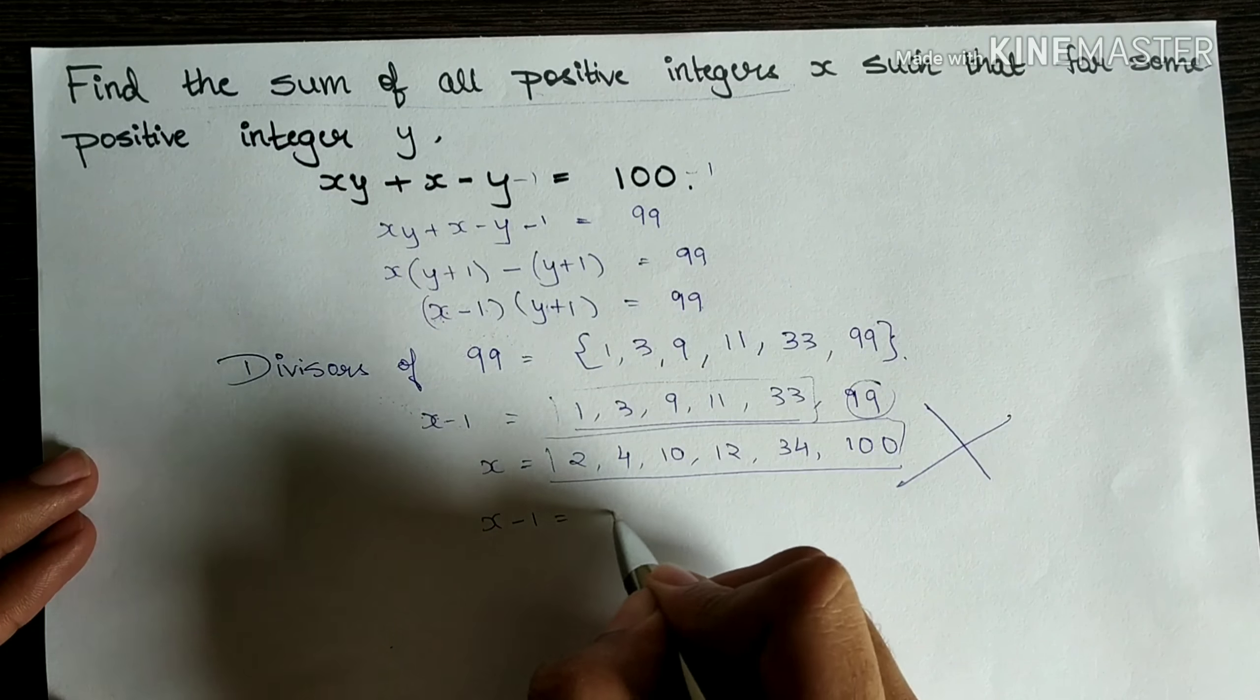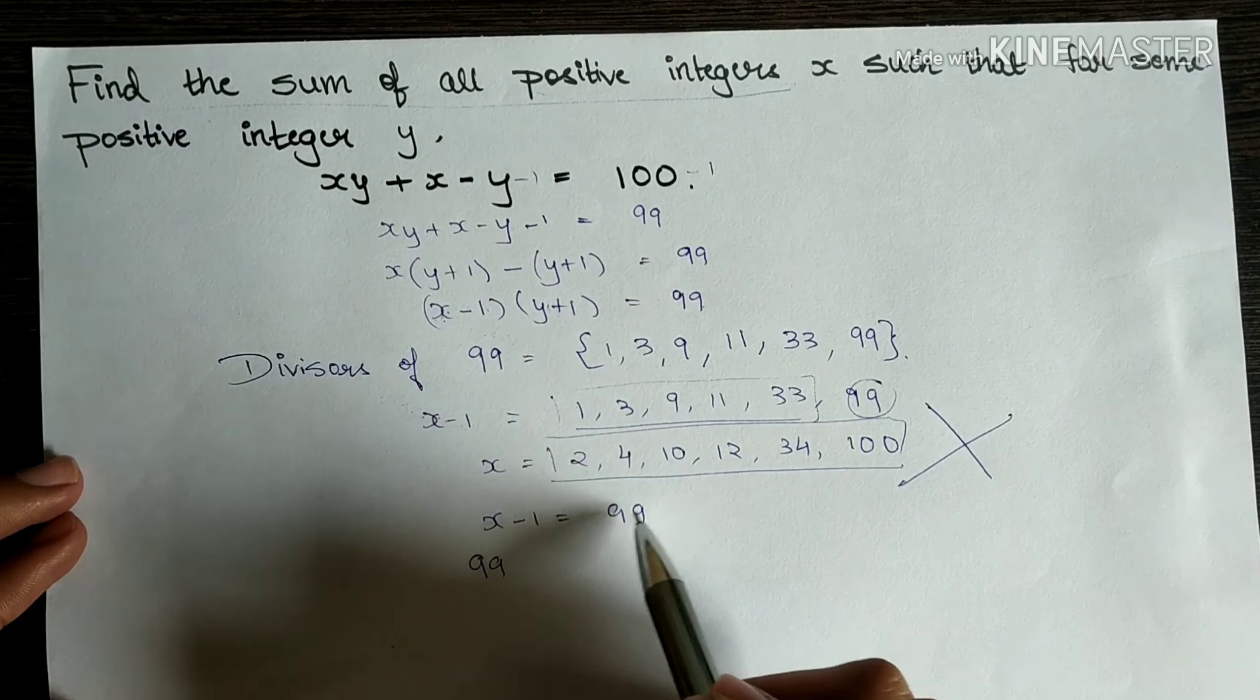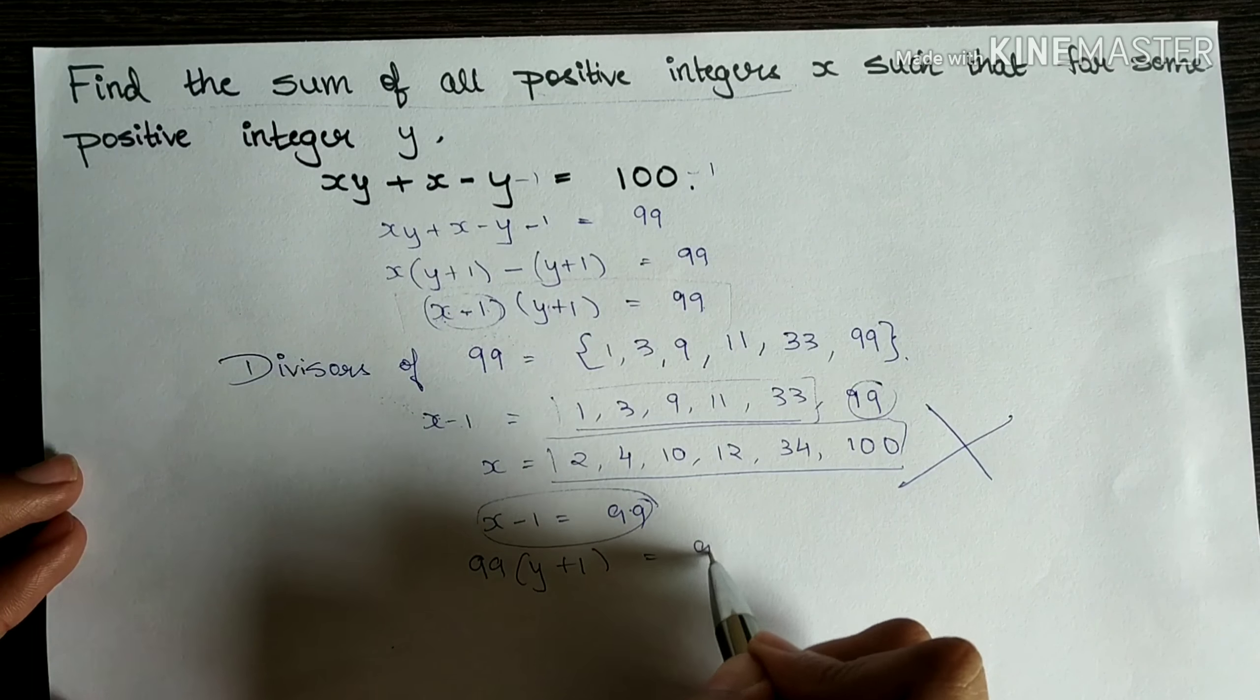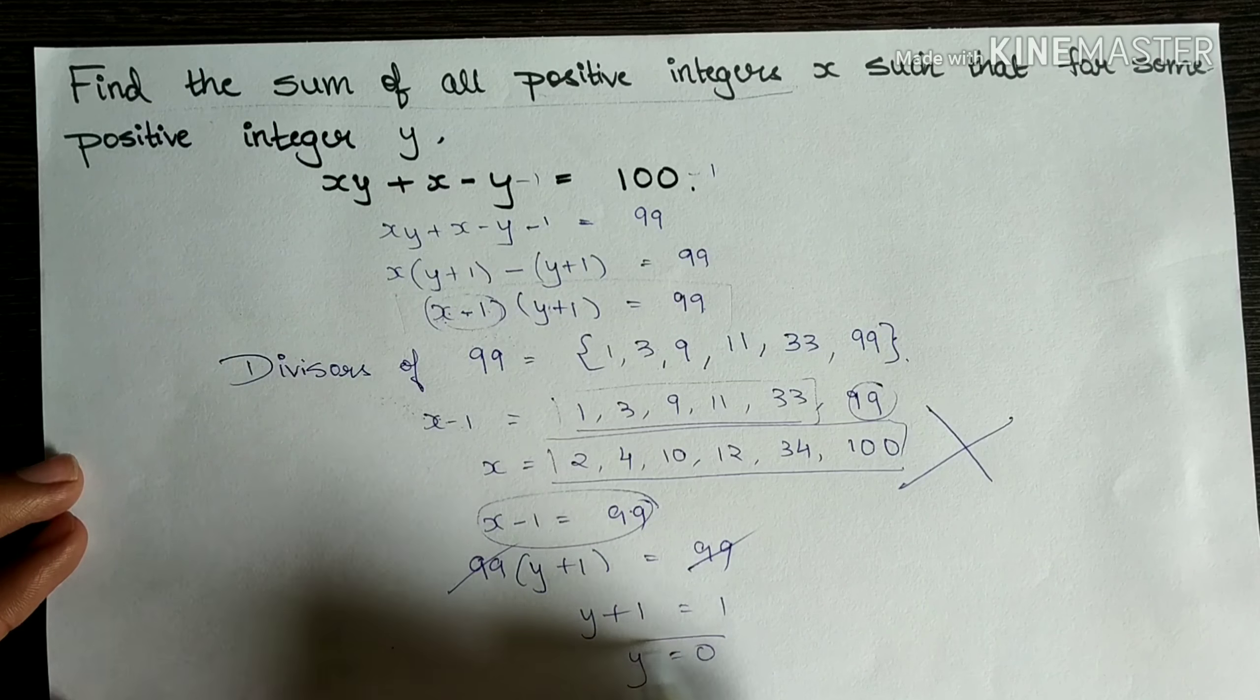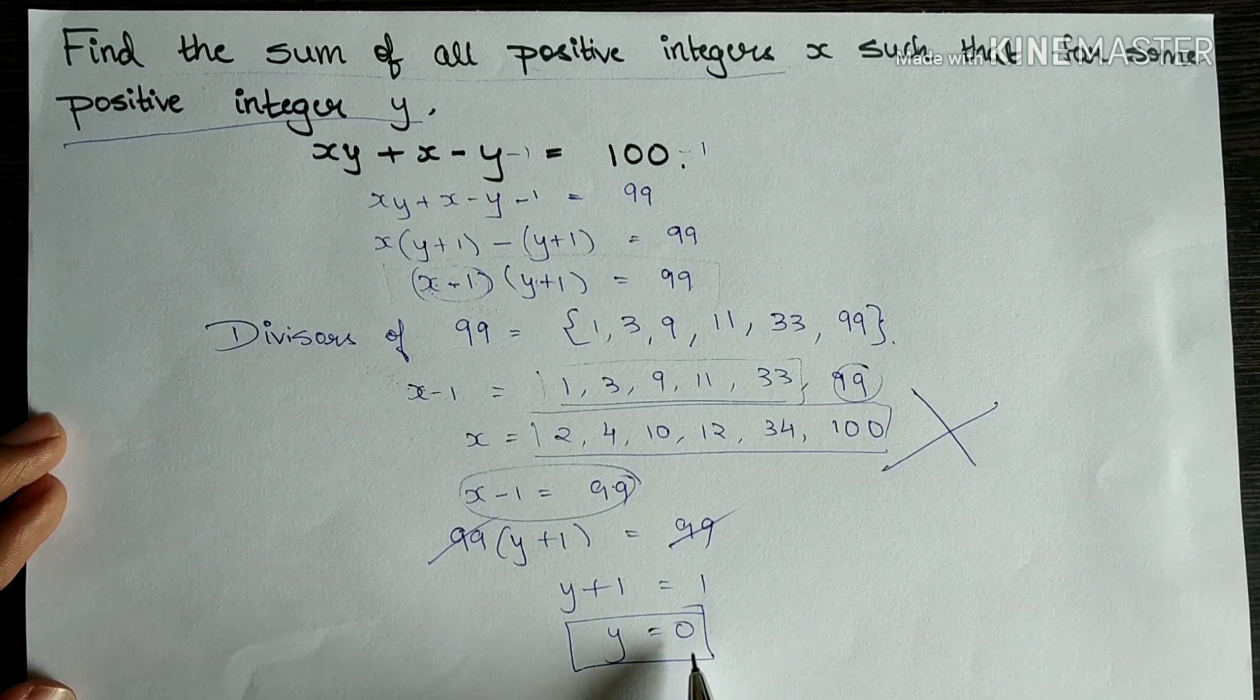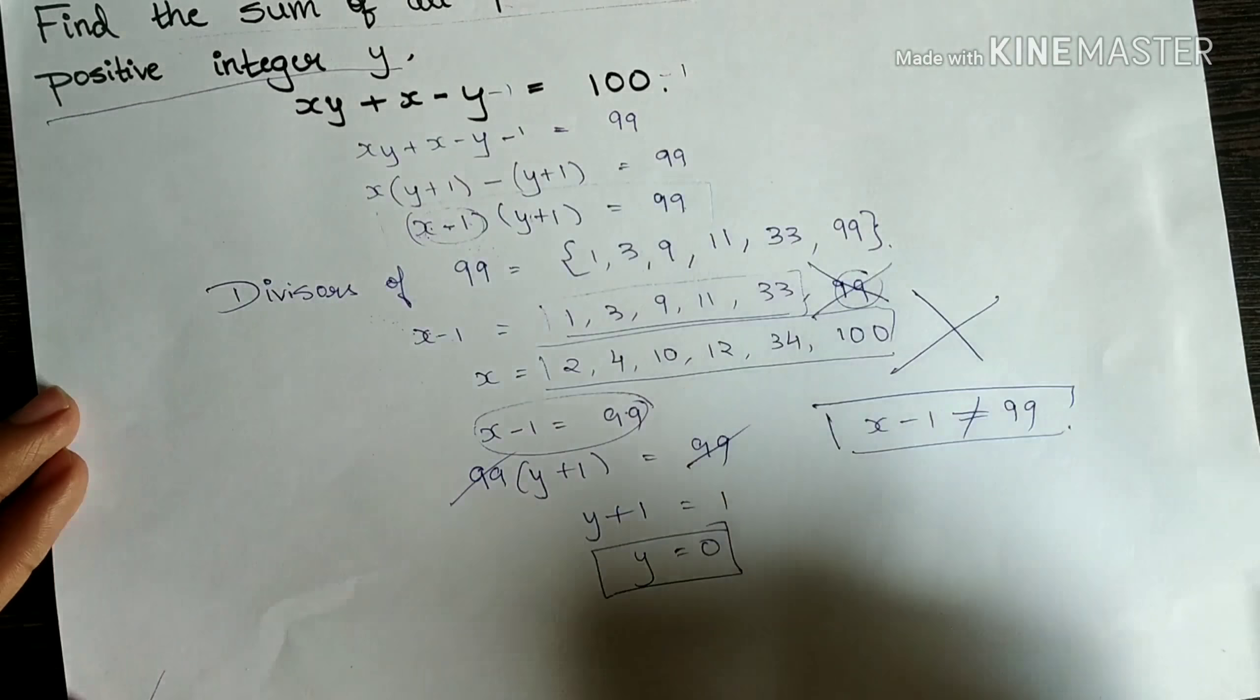If I equate x minus 1 is equal to 99, then obviously I have 99. See, I am equating it to 99. So it should satisfy this equation because x minus 1 is 99 into y plus 1 is equal to 99. Now 99 and 99 get cancelled. It is y plus 1 equal to 1, which means y is equal to 0. So what is the problem with this? The problem is that it should be a positive integer y. 0 is not a positive integer and hence x minus 1 is not equal to 99.